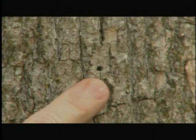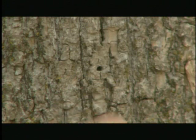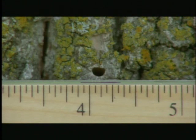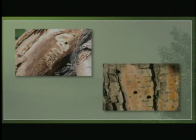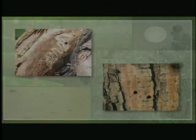The other EAB sign is the exit hole. In the early summer, the adult beetle chews its way out of the tree, leaving behind a small hole. The hole is about one eighth of an inch wide and is shaped just like the capital letter D. This D-shaped exit hole can be in any direction. If these two signs are both seen on an ash tree, it's likely that emerald ash borer is present, and it wouldn't take very long before a larva or adult beetle was found in or on the tree.